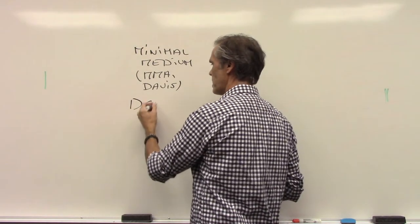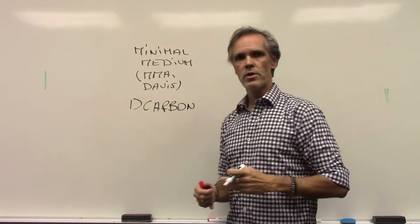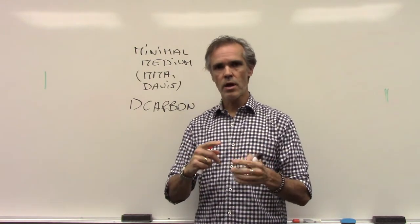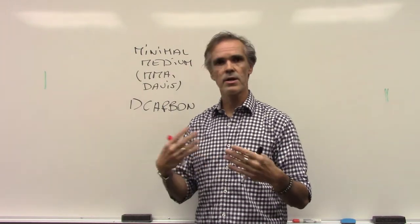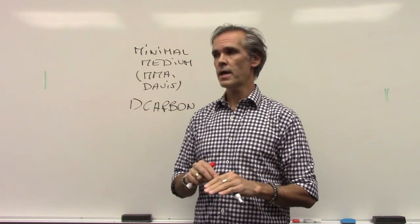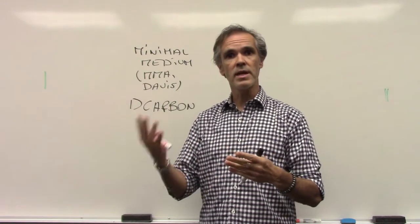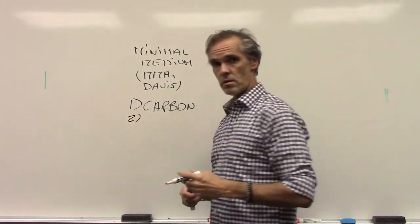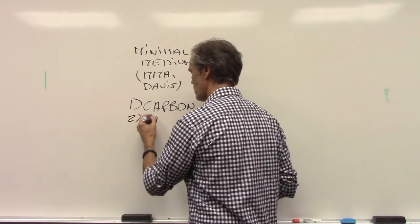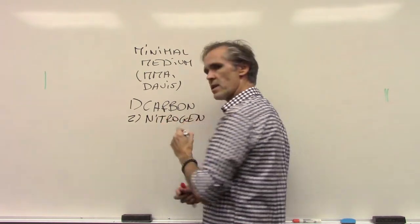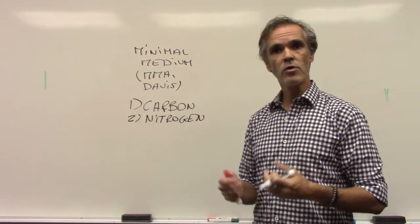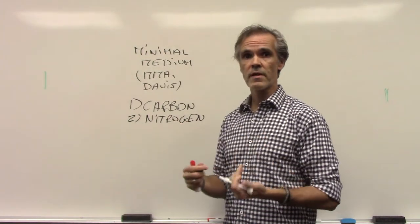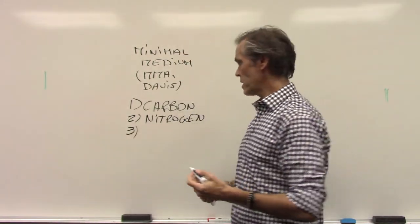The first important requirement is a carbon source. When we think about cells, bacteria included, all the structures — the membrane, cell wall, proteins, DNA, RNA — all contain carbon. Carbon is an atom that needs to be incorporated from the substrate. Another very important element is a nitrogen source. Nitrogen is critical because amino acids always contain nitrogen, and the bases in DNA and RNA also contain nitrogen.